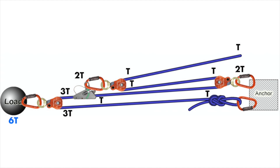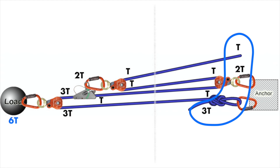Finally, following the rope to the figure of 8, we also have 3T at that point. Doing a quick sanity check, we draw a line down the middle of our system and add the tensions leaving the system on each side. On the left, this is the tension on the load: 6T. On the right, the tensions leaving the system are T plus 2T plus 3T, which gives us 6T on the right, matching the tension on the left.